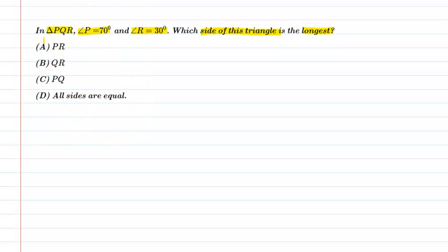Let us start by writing what is given in this question. In triangle PQR, angle P equals 70 degrees and angle R equals 30 degrees. We have to find the longest side of the triangle. Now we will move to the solution.